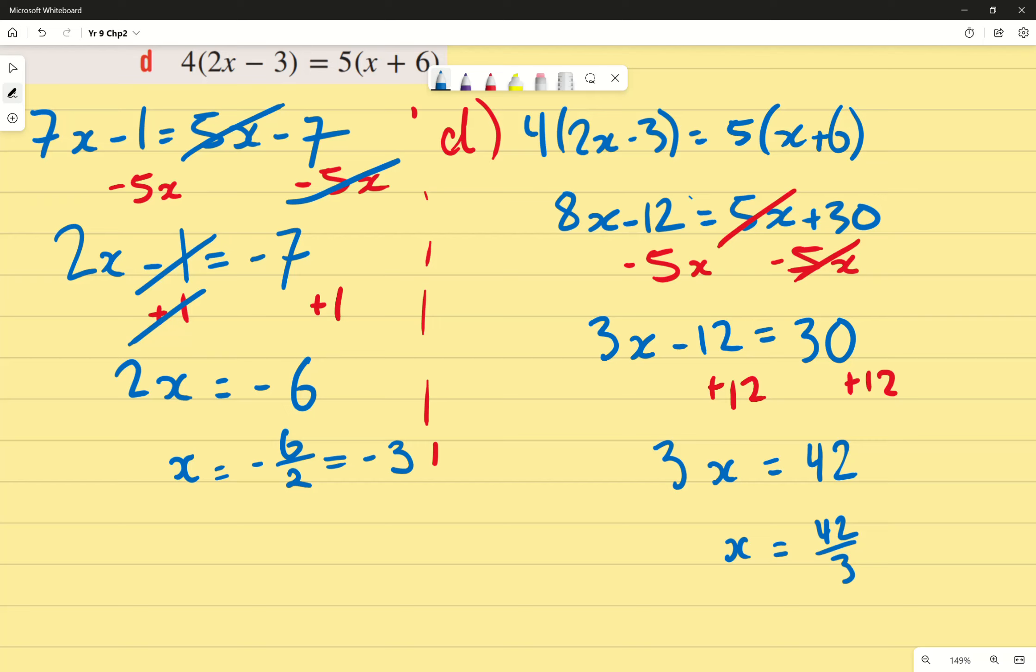Good. 42 is divisible by 3. Doesn't look like it, but it is. The way I think of it is, I know that 3 times 10 is 30. That would leave a remainder of 12, which I know fits in 4 times. So 14. And that would be our final answer.